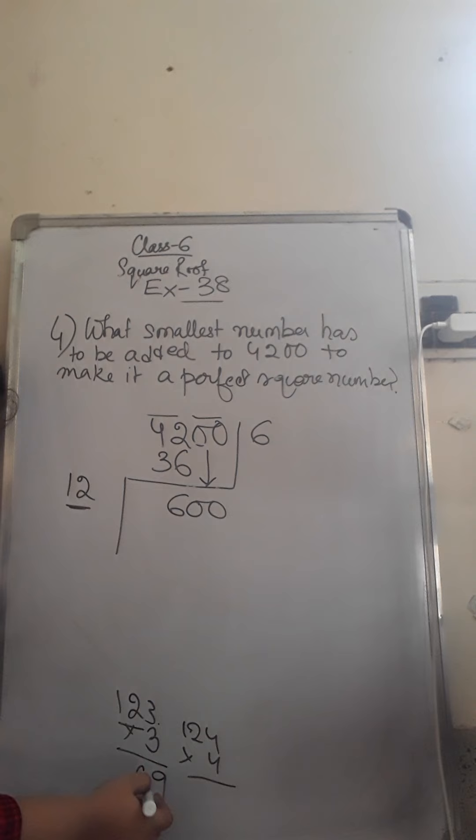So 3 times 3 is 9, 3 times 2 is 6, 3 times 1 is 3, that's 369. 4 times 4 is 16, 1, 4 times 2 is 8, 1, 9, 4 times 1 is 4, that's 496.